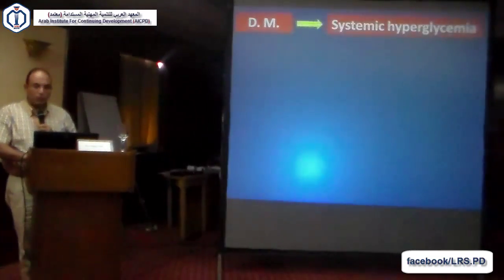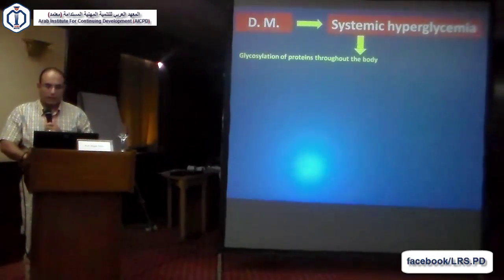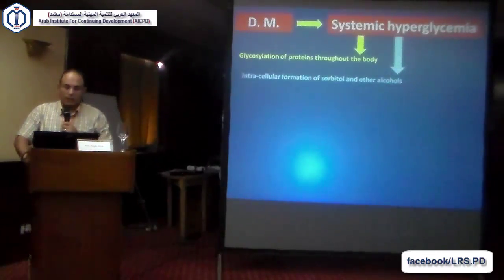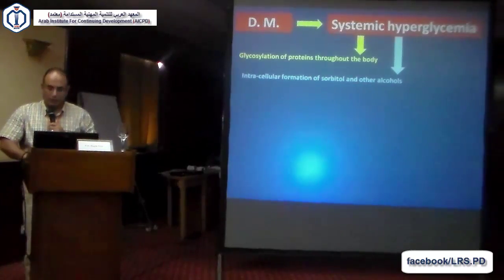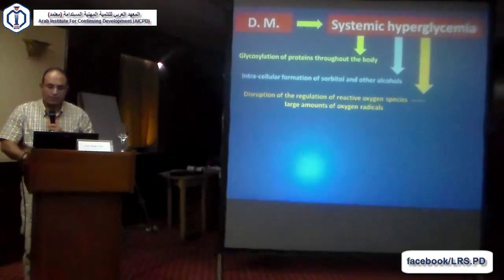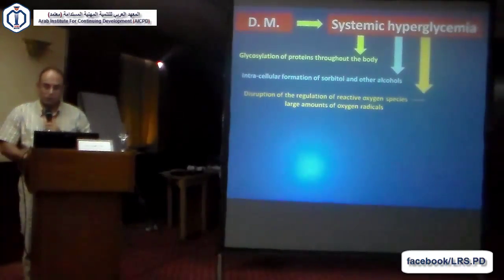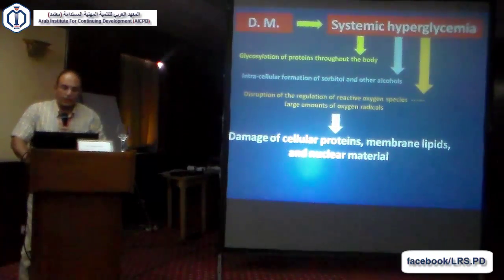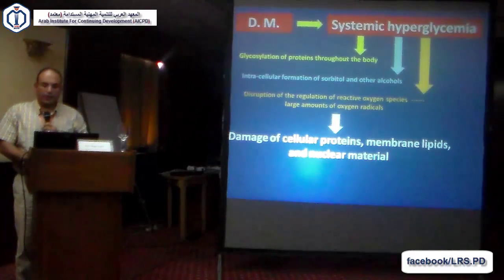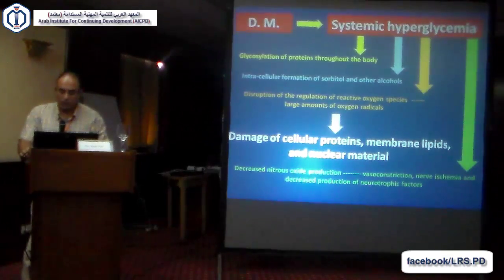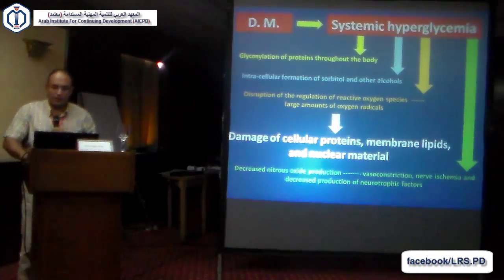Diabetes mellitus leads to systemic hyperglycemia, which causes glycosylation of proteins throughout the body, intracellular formation of sorbitol and other alcohols, and disruption of reactive oxygen species leading to production of larger amounts of oxygen free radicals. All these factors damage cellular proteins, membrane lipids, and nuclear materials. Also, there is decreased nitric oxide production leading to vasoconstriction, nerve ischemia, and decreased production of neurotrophic factors.